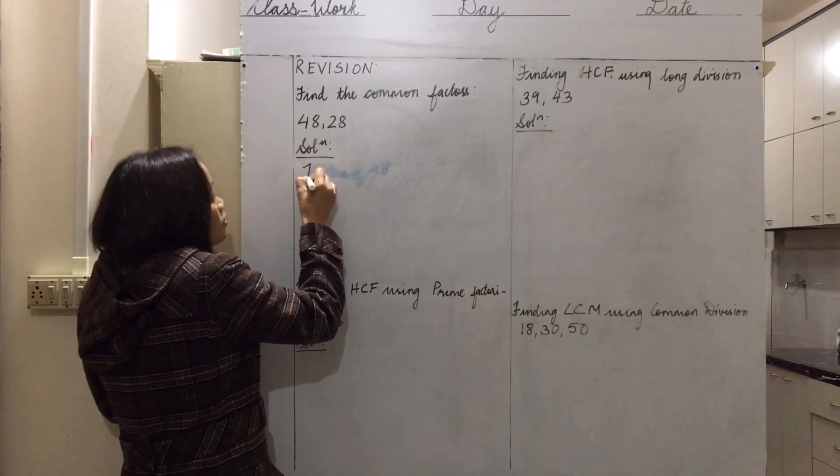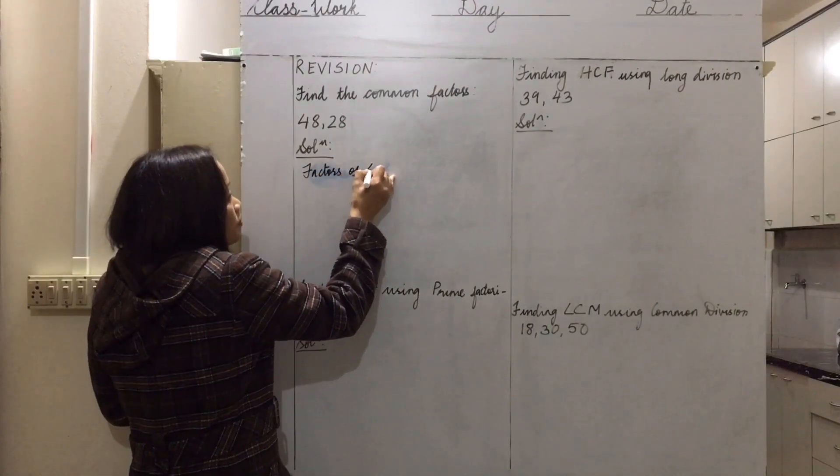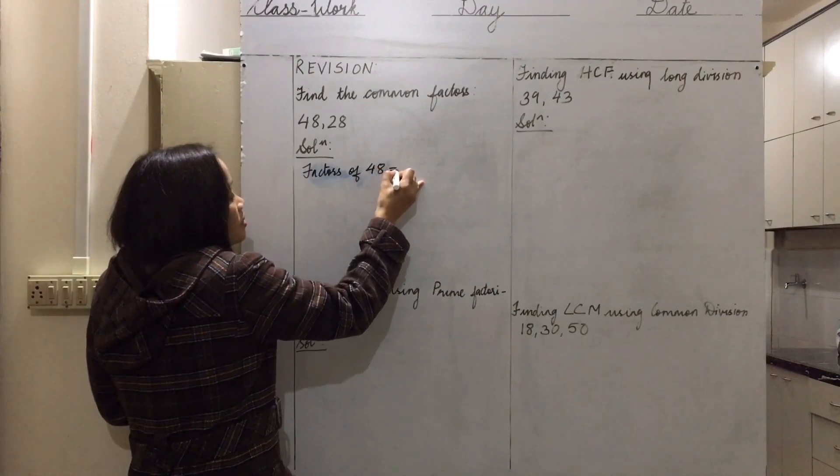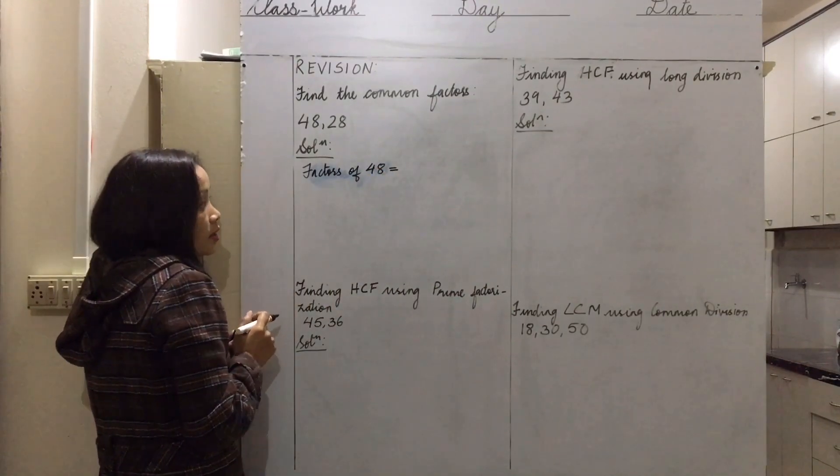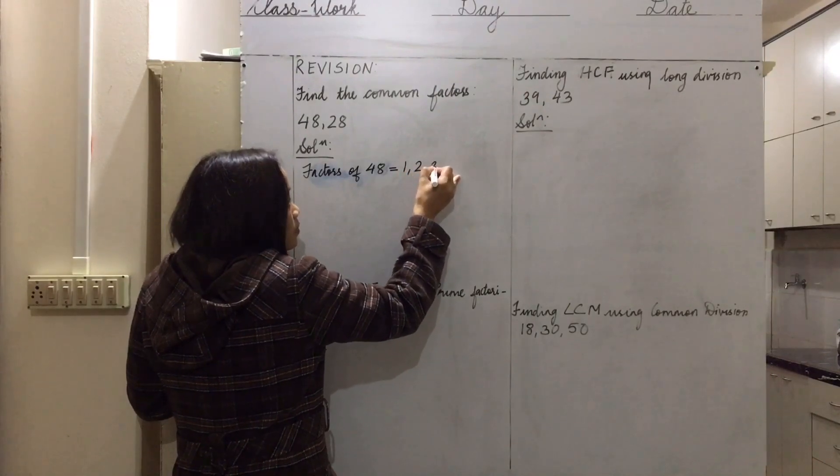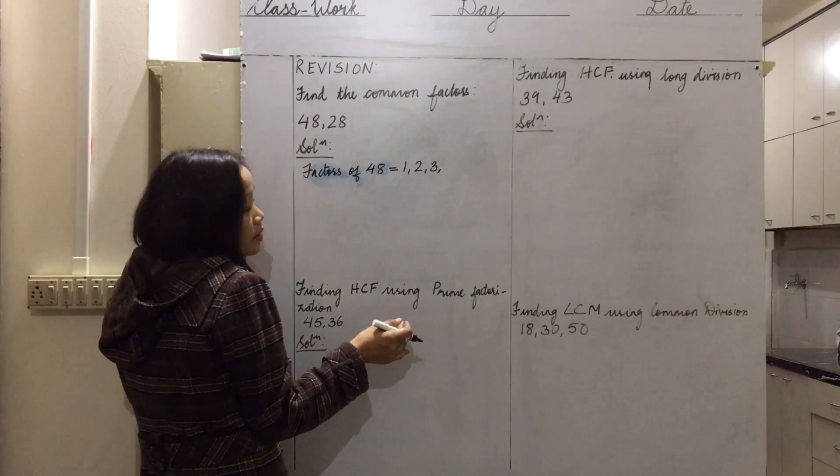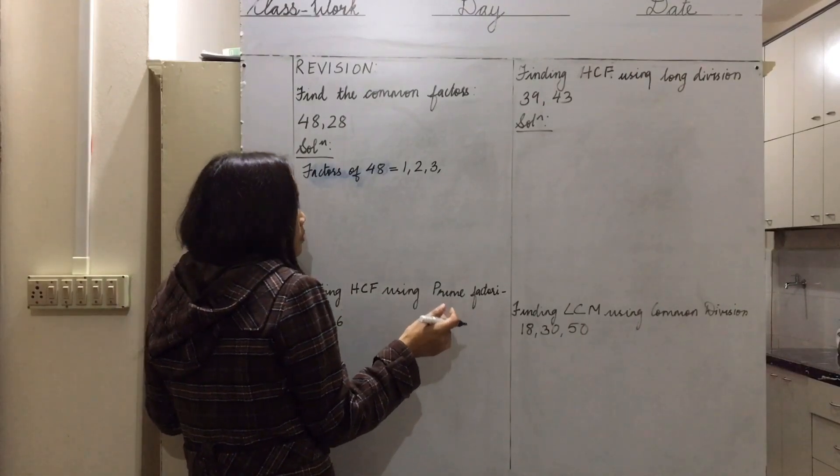The factors of 48. What are the numbers that can divide 48? One can divide 48, two, three. For this I want you to revise the divisibility rules. Four,